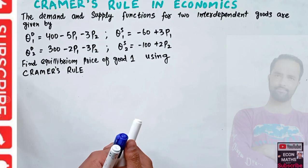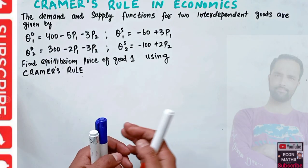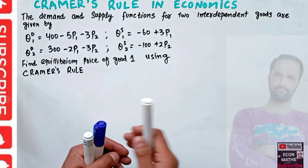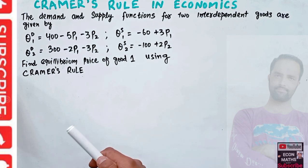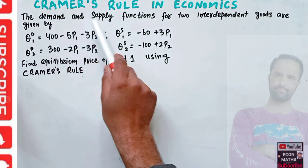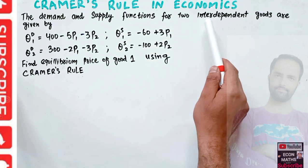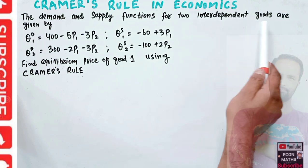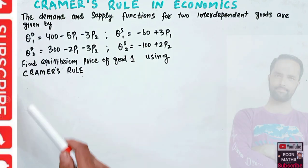In this video we will learn how to apply Cramer's Rule in finding the equilibrium price. The question gives us the demand and supply functions for two interdependent goods.